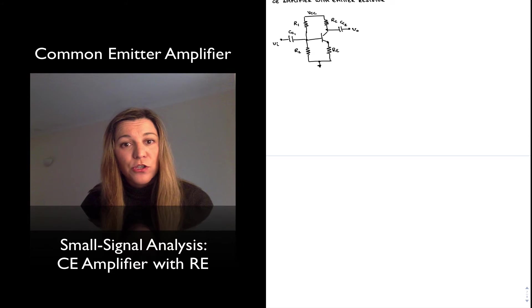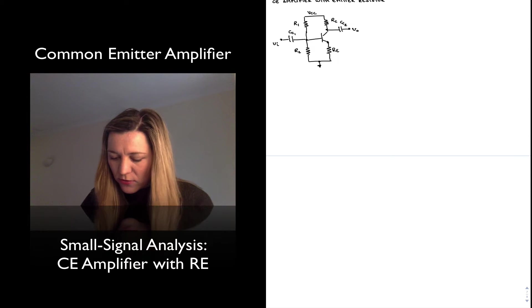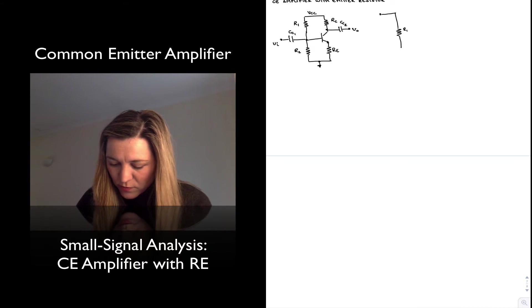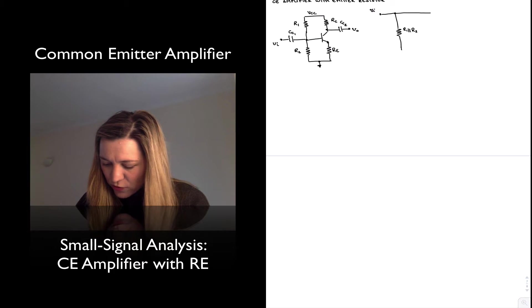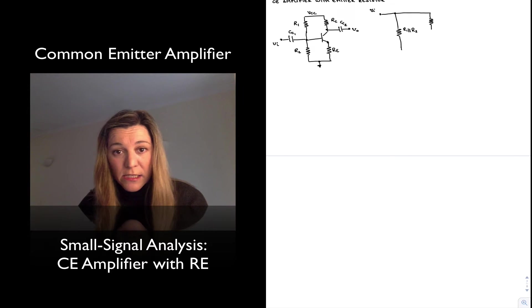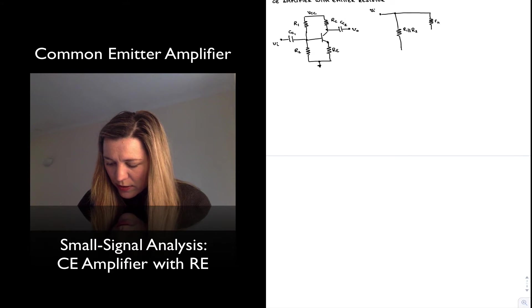As before, I'm going to first draw the small signal equivalent circuit, which is going to be very similar to the previous case except now I'll have an emitter resistor. So I still have from the input this is V_in, my R1 in parallel with R2 going to ground, and then from the base of the transistor I have the dynamic resistance of the base-emitter junction R_pi that will be V_pi.